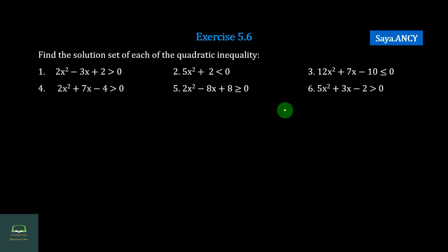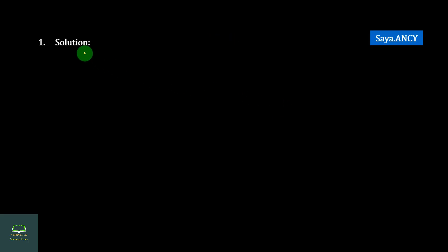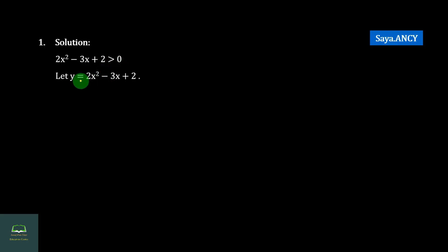So we shall solve all the problems using our main pi bar method. Number 1: 2a squared minus 3a squared plus 2 greater than 0.